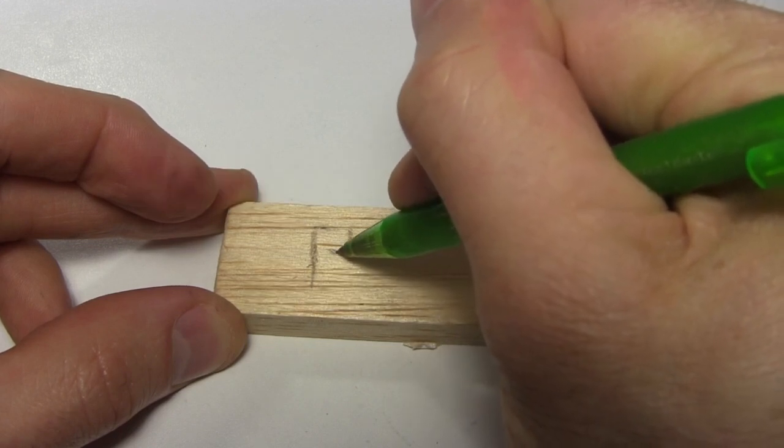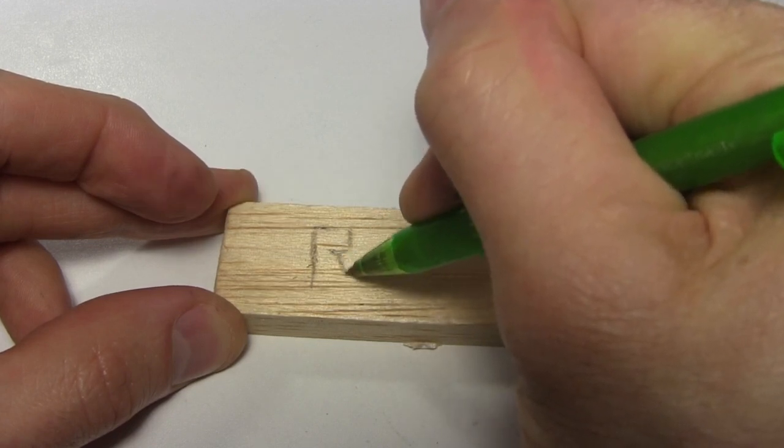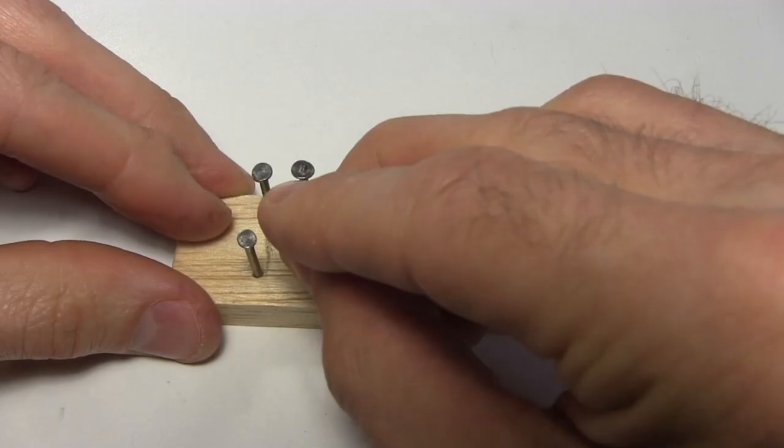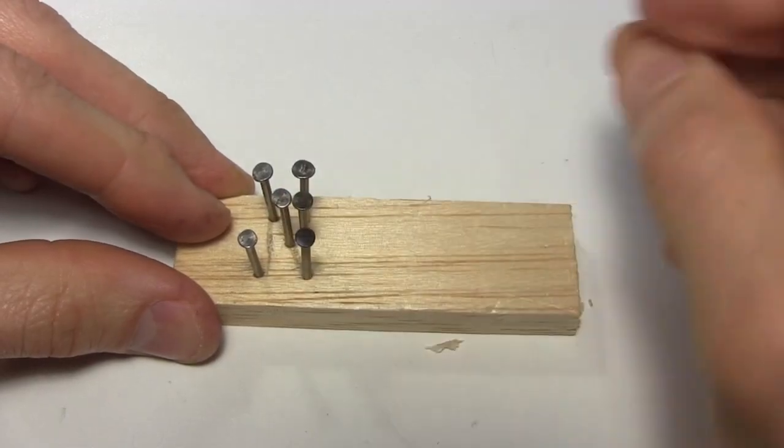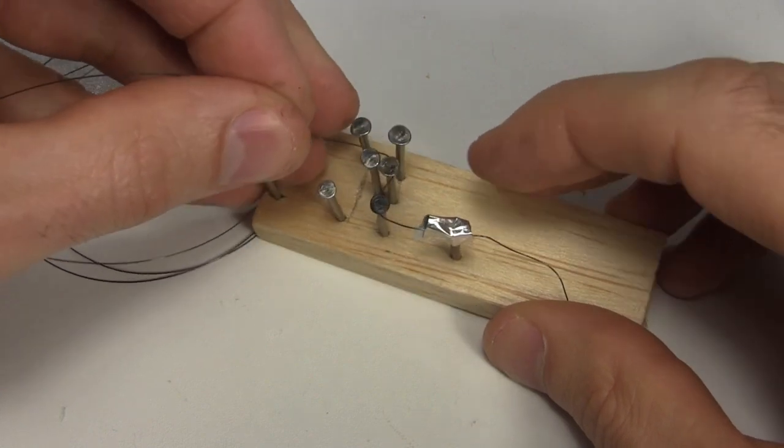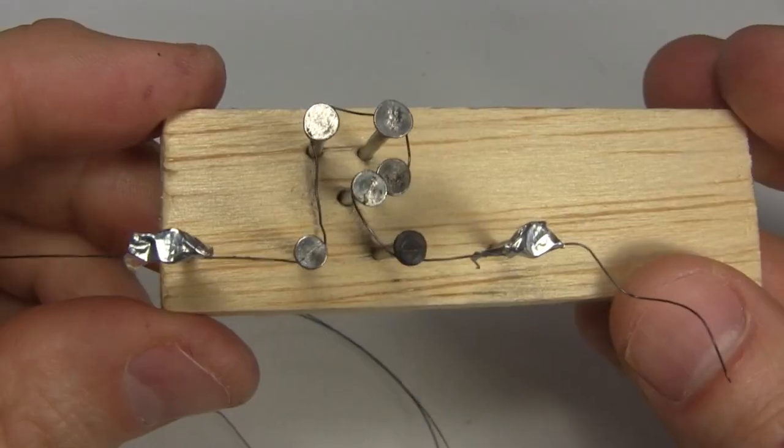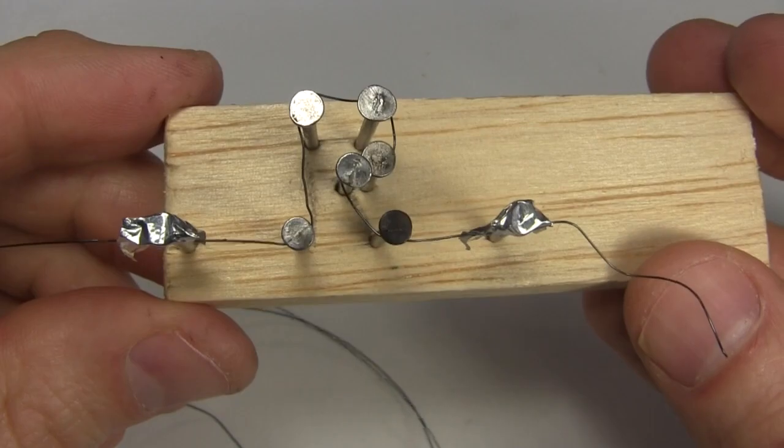I first make a jig by drawing the desired shape on a block of wood, an R for Rimstar Org. I push nails in all the corners of the drawing. Then I bend the nitinol wire around the nails to hold the wire in place, until an R shaped wire is firmly held in place by the nails.